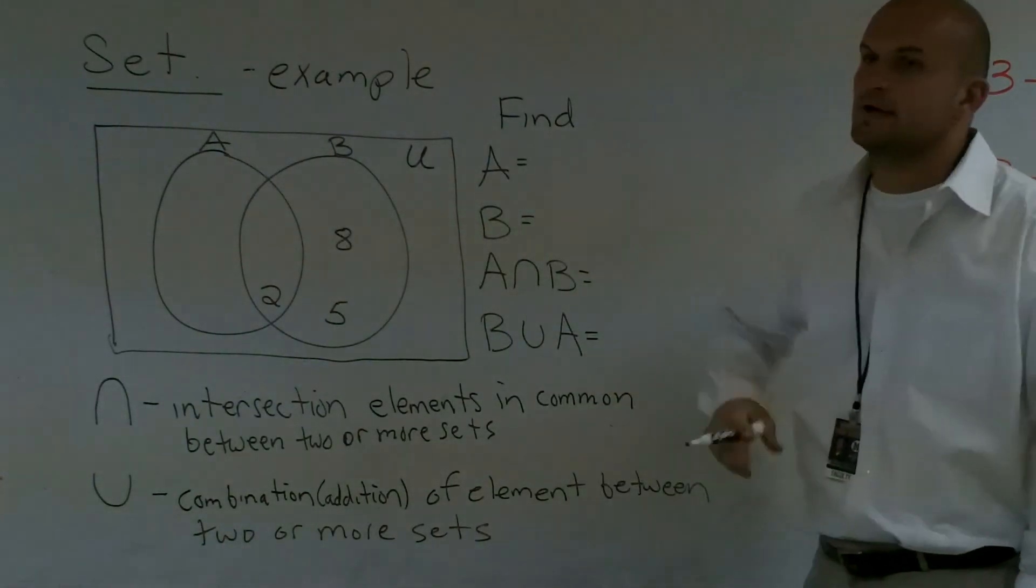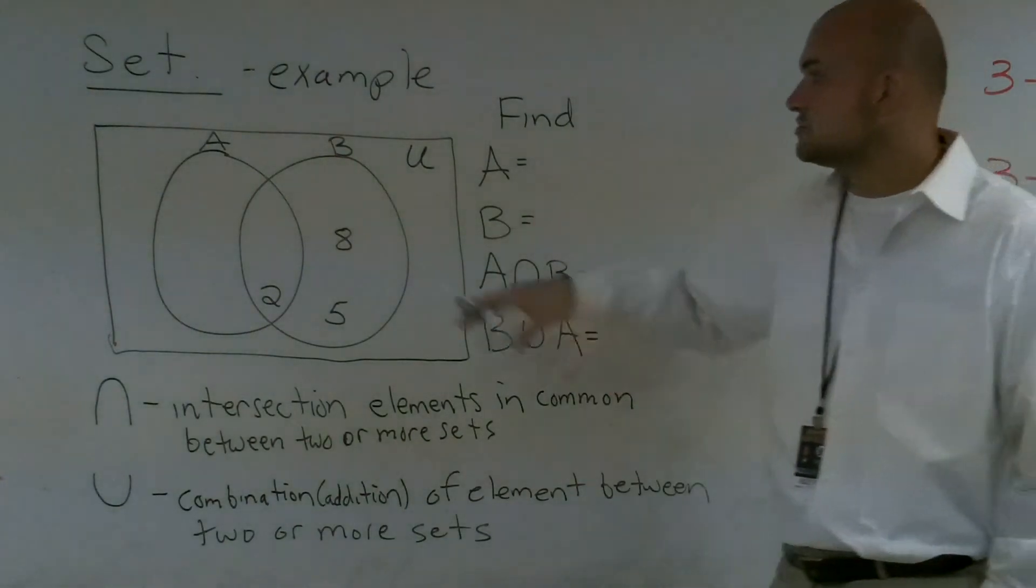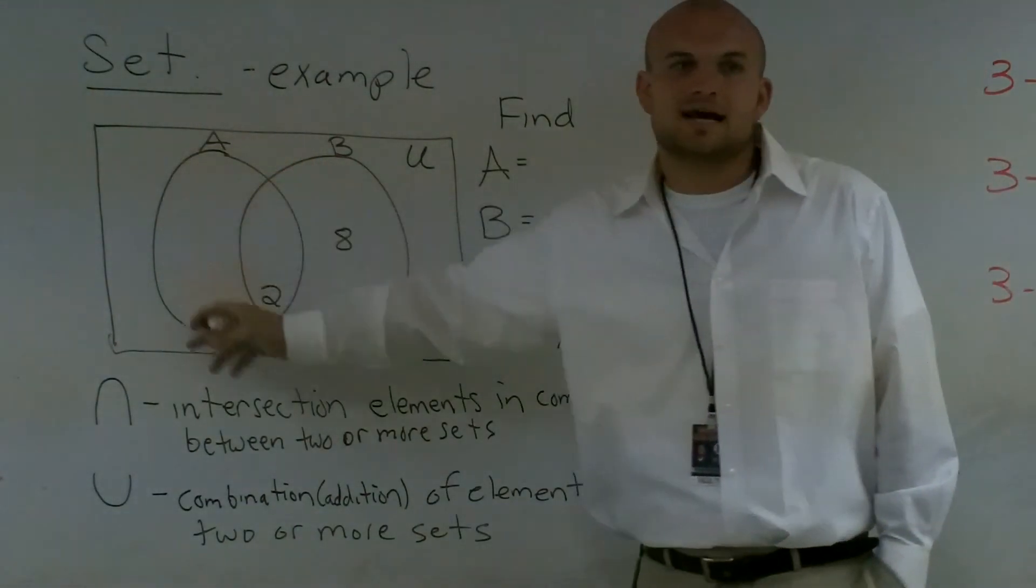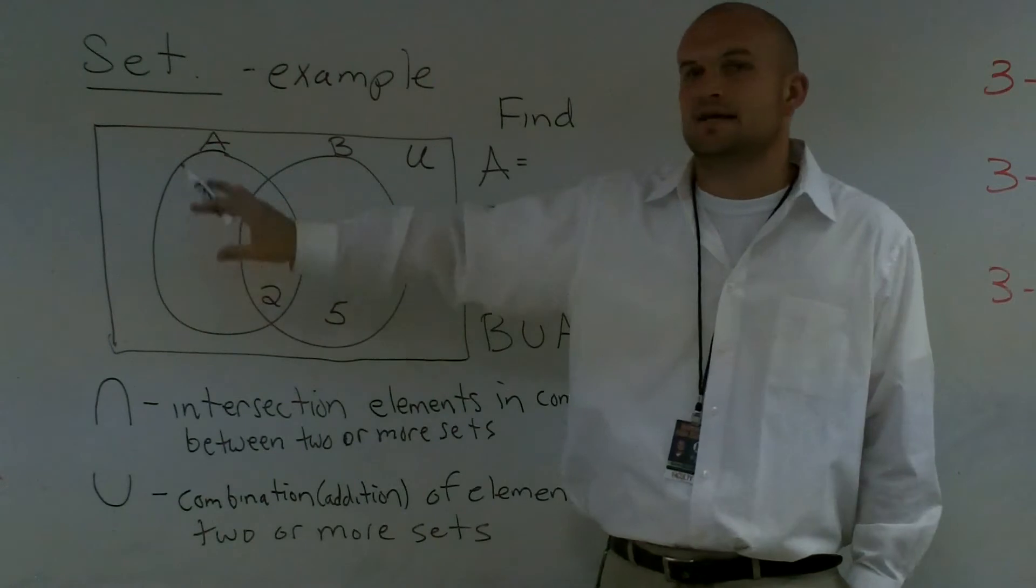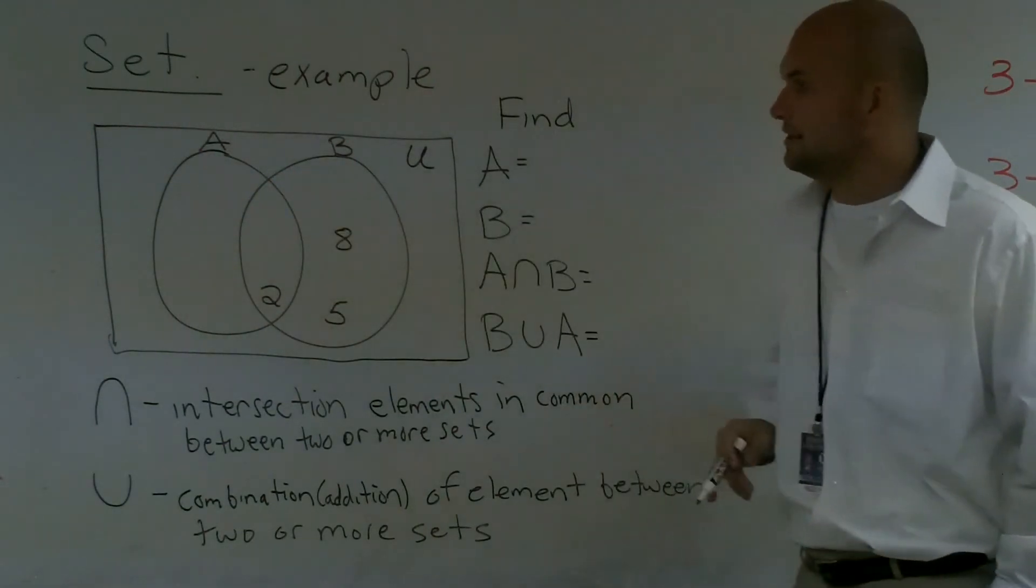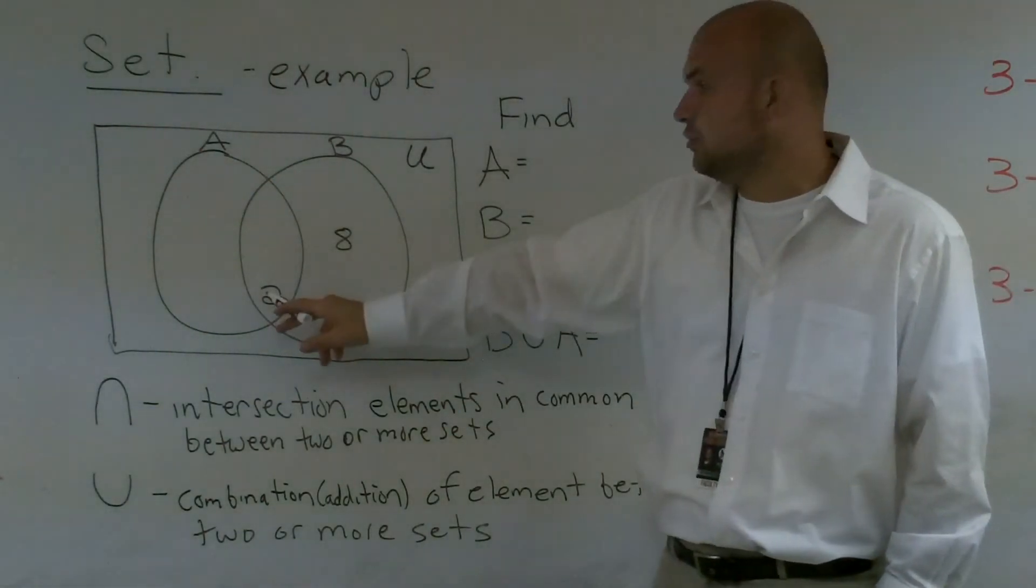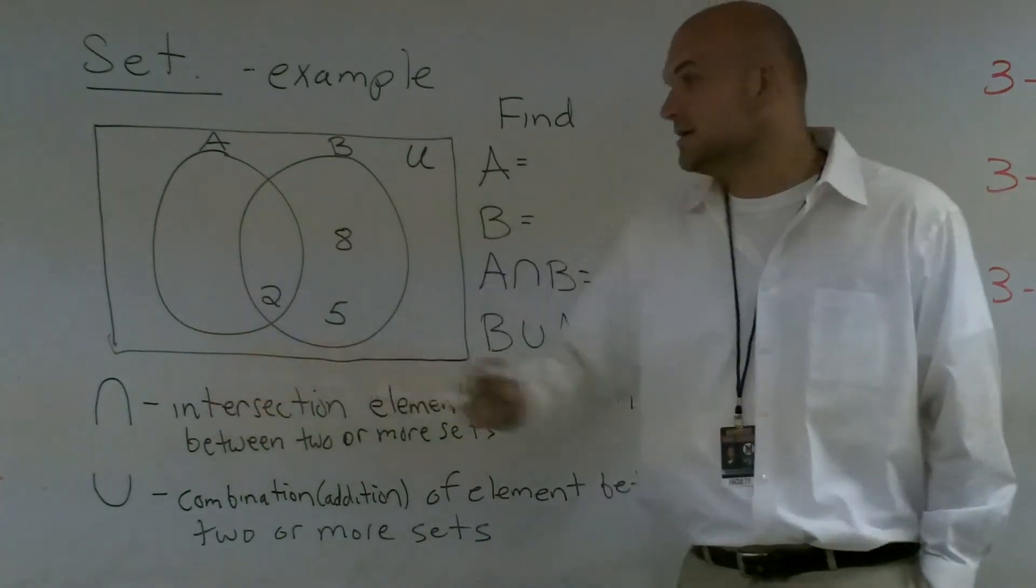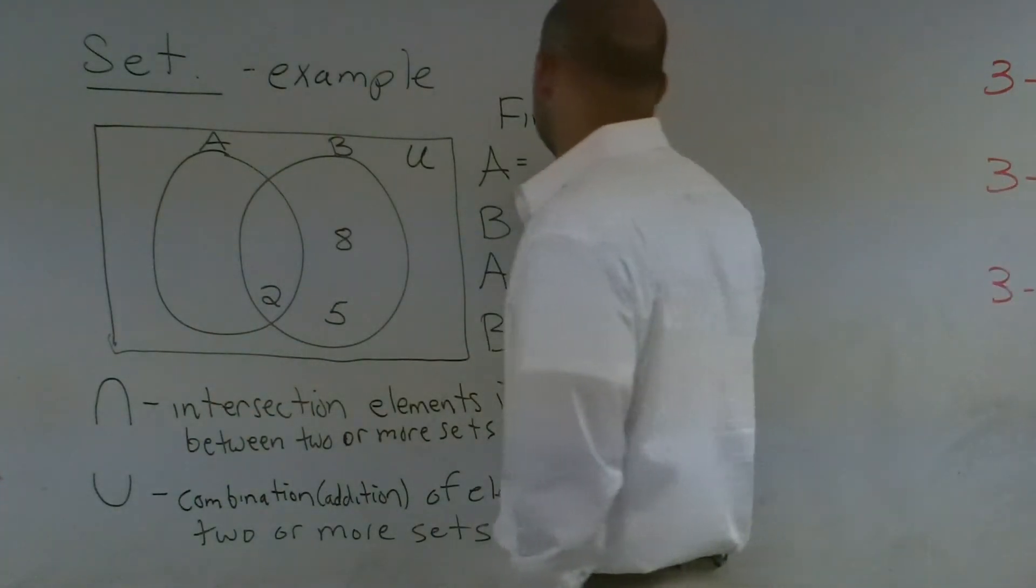So now what we need to do is determine what is in our two sets. I look at set A. Everything that's inside of the circle is contained in set A. So therefore, I look and I say, well, two is the only number that's inside of circle A. So if I want to say what is contained in A?